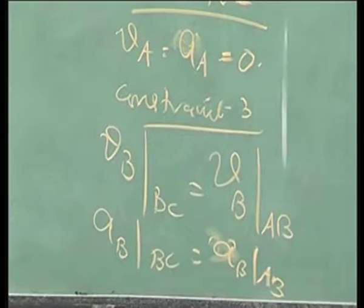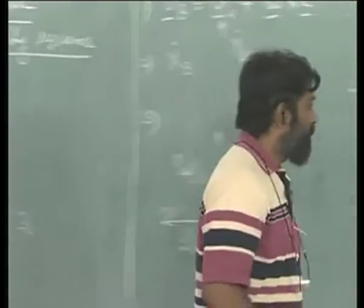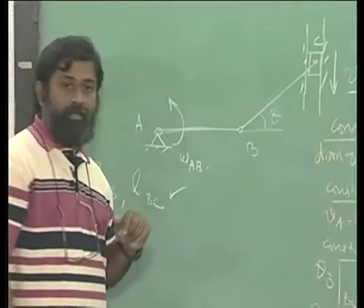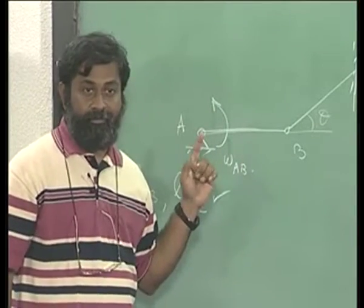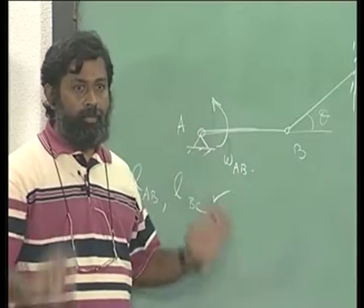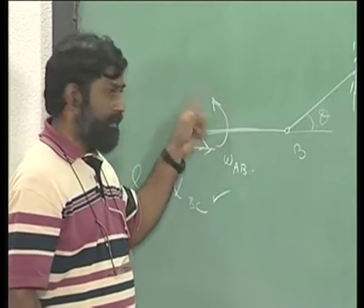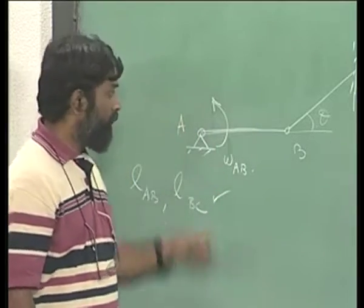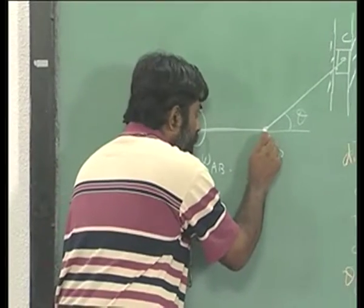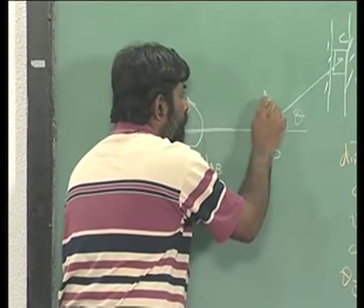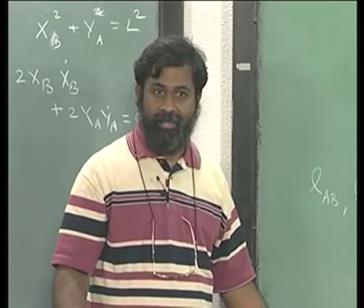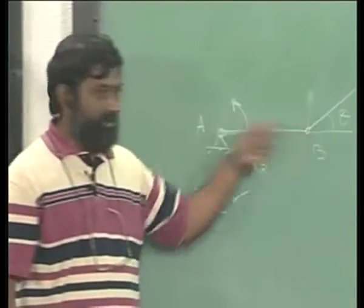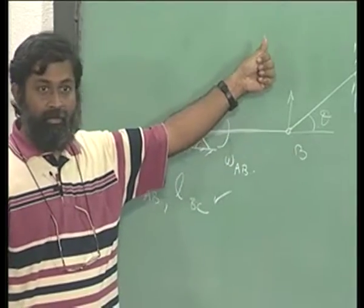Once I understand these constraints, now it is very easy. I need to find out the angular velocity of rod AB. How will I go about? Very simple. This has an angular velocity which means what? This particular point will be moving like this. Do you get this? This is horizontal, this will be moving vertically upward.